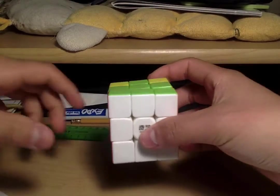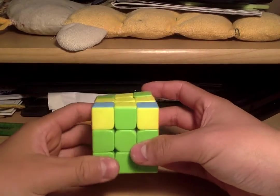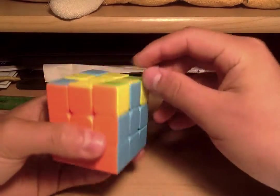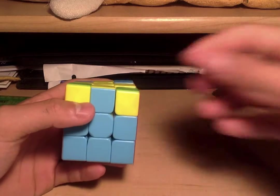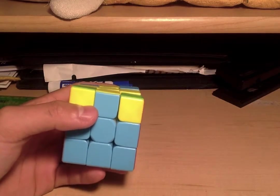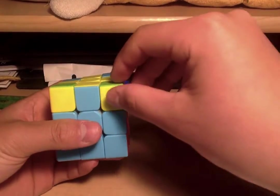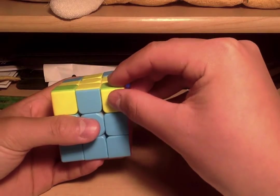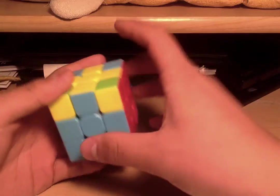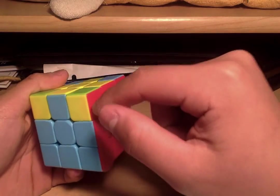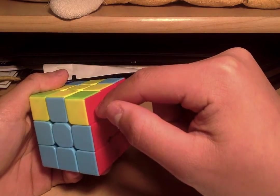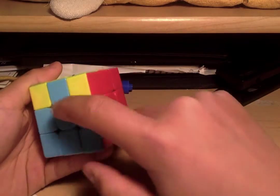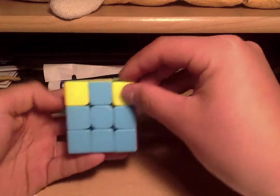Once you've done that, make sure all the corner pieces are at the right spot. At the right spot, you don't have to be exactly—you just want to make sure the colors are right. For example, this one has yellow, green, and red, but this one only has yellow. This is red but this is not green.